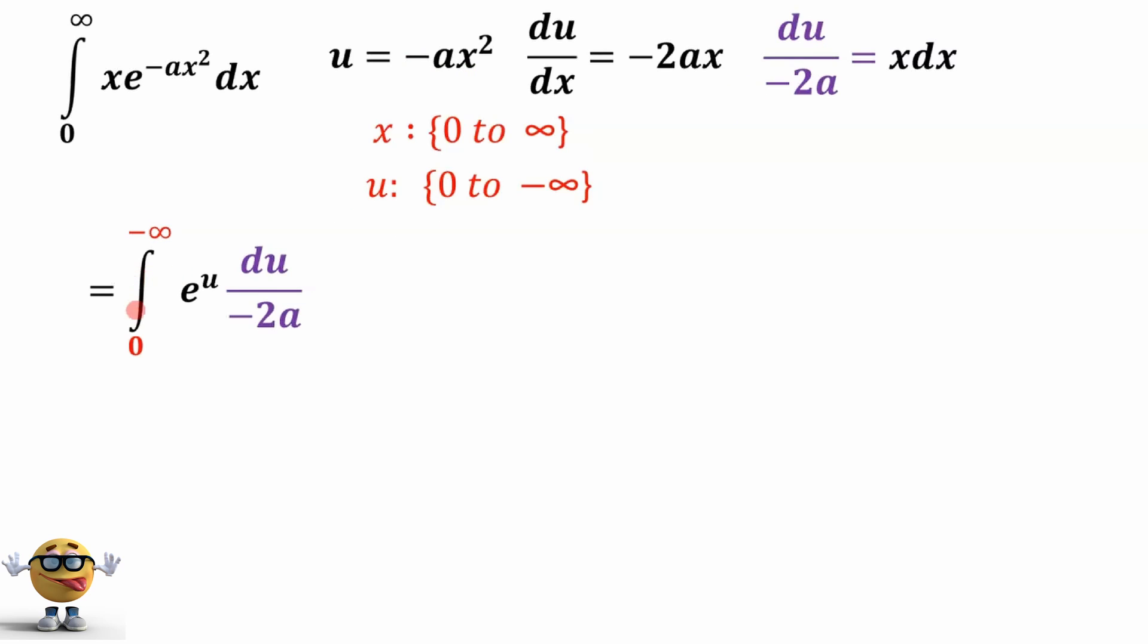So we'll substitute those two things in here. And this is now very easy to evaluate. This is our friend. The integral of e to the u is just e to the u from our limits right here. This negative 1 over 2a gets pulled out of the integral like this. And then we can evaluate this.